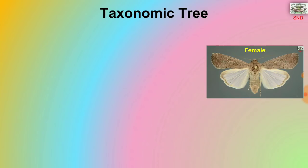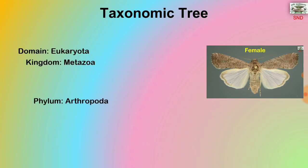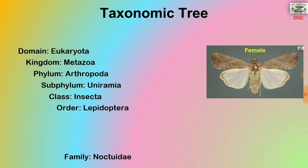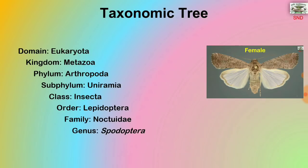The taxonomic tree — the classification arrangement — is as follows: Domain Eukaryota, Kingdom Metazoa, Phylum Arthropoda, Subphylum Uniramia, Class Insecta, Order Lepidoptera, Family Noctuidae, Genus Spodoptera and Species frugiperda.